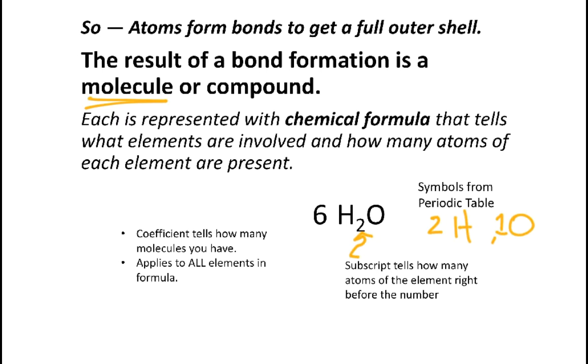In this case, we have two atoms of hydrogen. If there's just one atom of an element, we don't put a subscript. We have one oxygen atom, two hydrogens. You'll also often see what's called a coefficient. That coefficient is in front of the formula and tells you how many molecules you have.